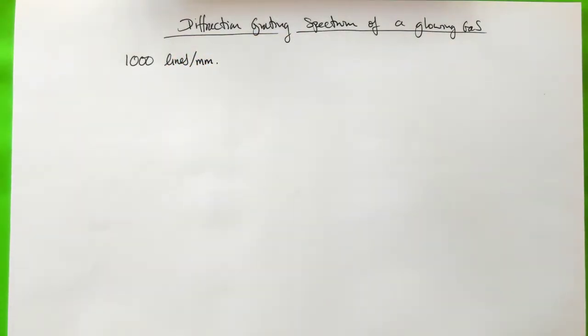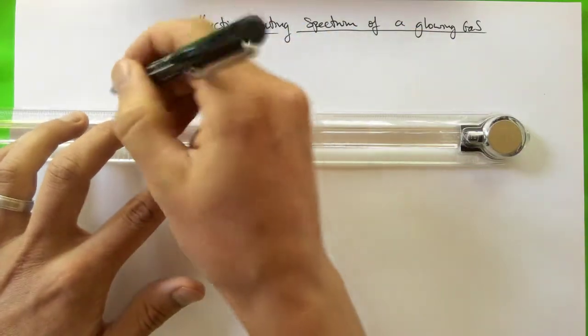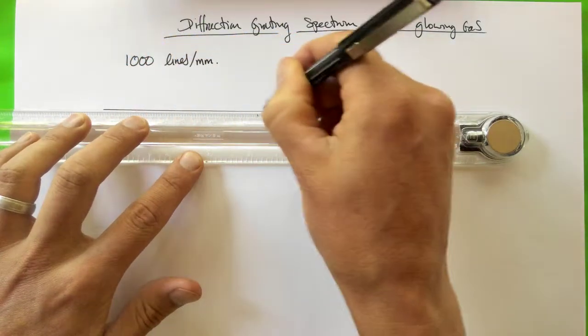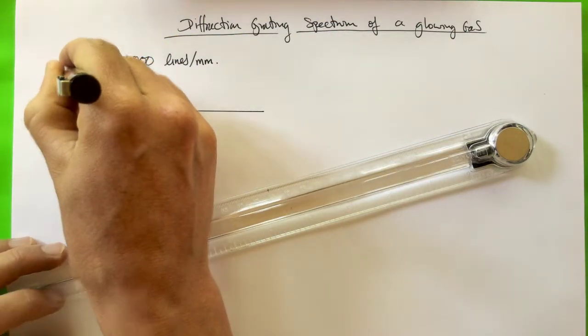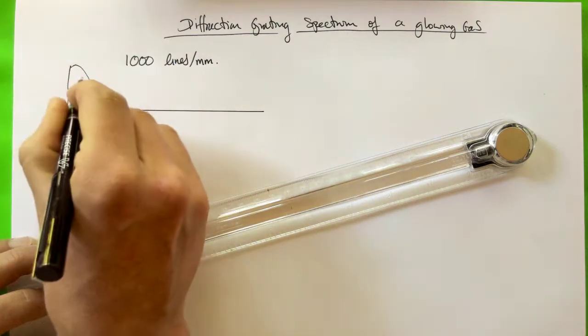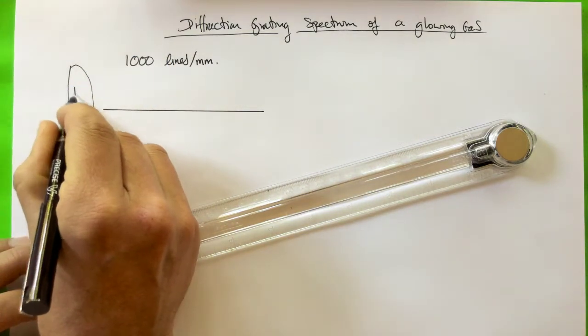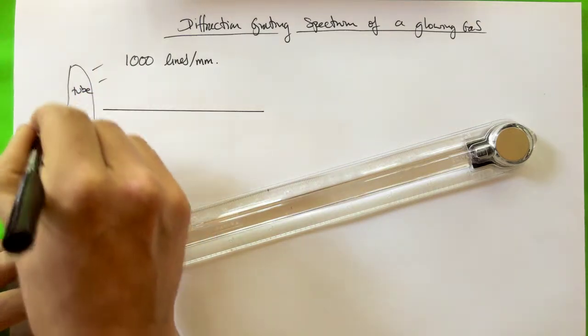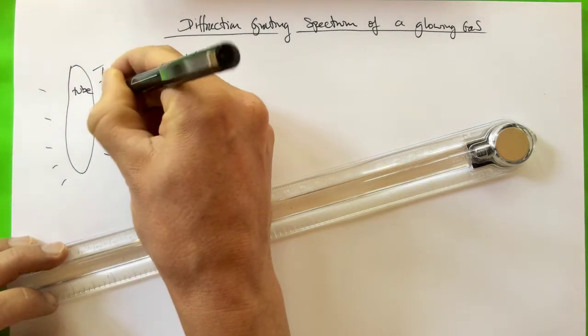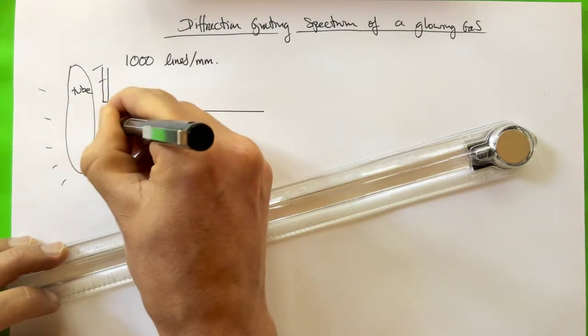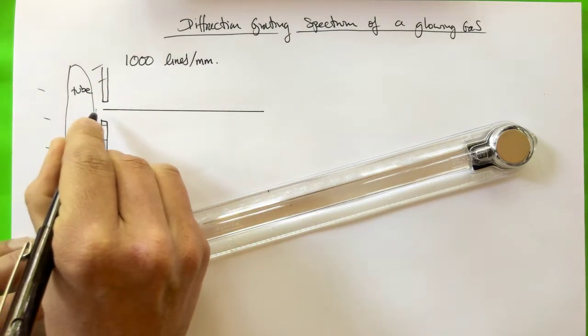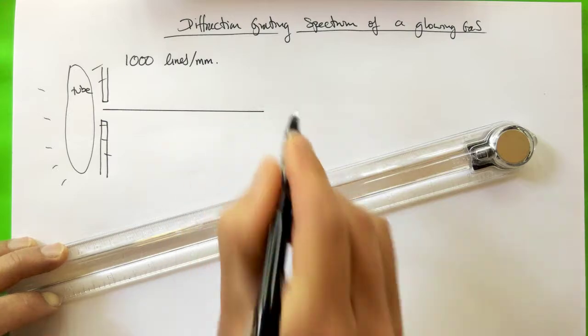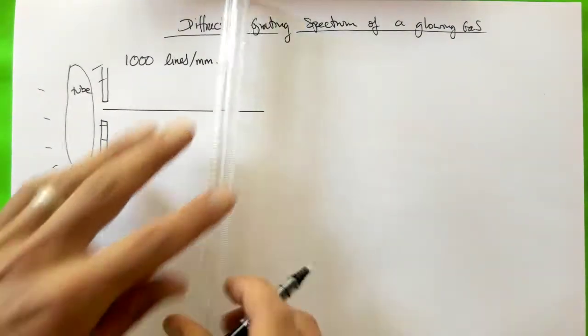And the question tells us that when this light comes from the glowing gas, let's imagine that we isolate some of the light from our glowing gas, maybe the glowing gas is inside a tube, and it's glowing, and maybe we somehow isolate some of that light by making a slit in a piece of cardboard or something so that some of that light can come out in a straight line and come towards our diffraction grating.